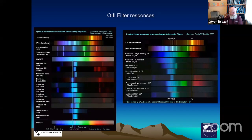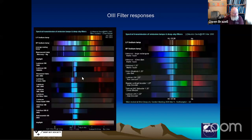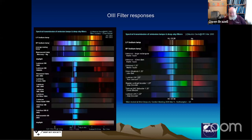Many years ago, a former BAA member, Morris Gavin, made a filter response measuring device. We actually measured the colour response of a number of filters, and this shows a collection of filters where you can see the O3 lines and how the bandpass worked. Later at a deep sky section meeting in 2005, he took it along and people brought their filters to have them measured.